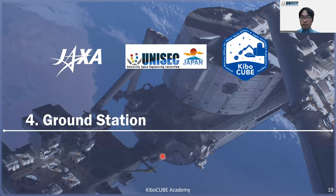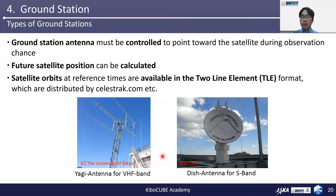The next is Section 4: Ground Station. In this section, I talk about the ground station and related components. I already talked about the frequency variations. In general, there are two types of ground station antennas. The left figure shows a Yagi antenna for VHF and UHF band, and the right figure shows a dish antenna for S-band communications.